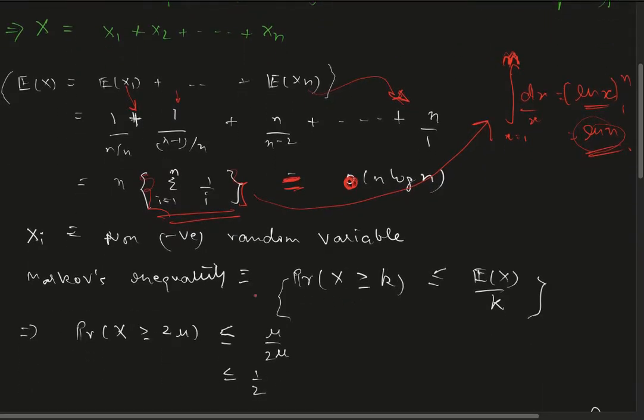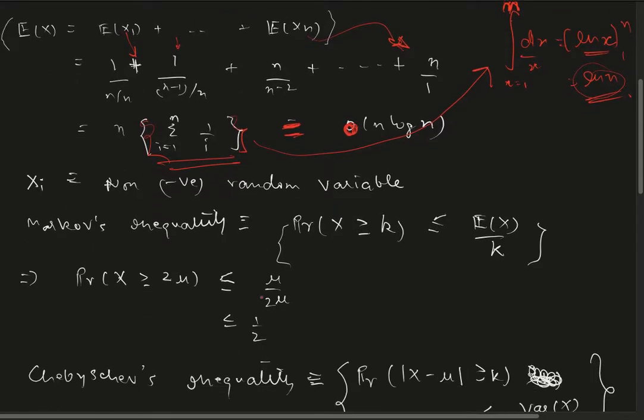As X_i is a non-negative random variable, we can use Markov's inequality. We can use Markov's inequality to find the probability that the number of samples required is greater than two times the expected value is less than half.